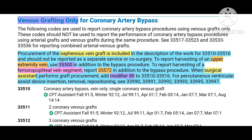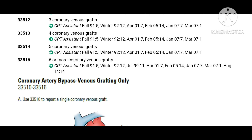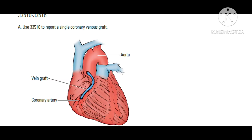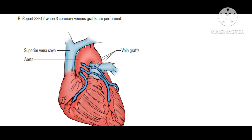Now moving to the codes: from 33510 through 33516, all codes are used according to the number of venous grafts used for the coronary artery bypass grafting procedure. Remember, these are used only for vein-only grafts. Looking at the picture, you can see one vein graft used in one example and three vein grafts in another — drop your answers in the comments.